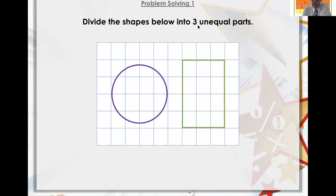Divide the shapes below into three unequal parts. Unequal parts. That means they're not the same. That's easy. There you go. Hundreds of answers. Unequal. Equal? A bit more difficult.